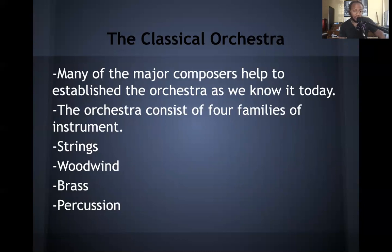Woodwinds consist of a number of different instruments — flute, which is the soprano instrument; oboe, a double reed instrument that can double a lot of other instruments; clarinet; bassoon; and English horn. It's really a very diverse grouping of instruments in the woodwind family.